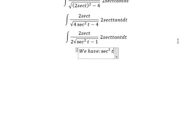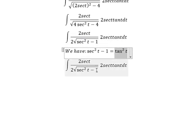Secant squared t minus one equals tan squared t. So we put tan squared t in here.